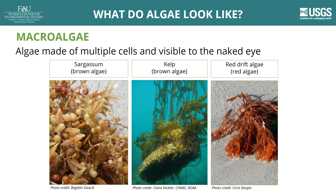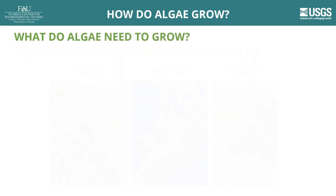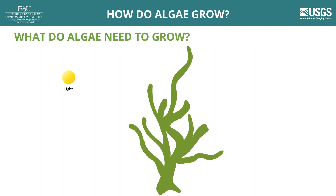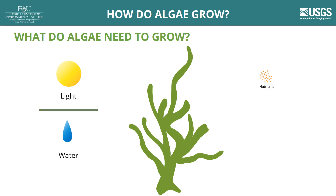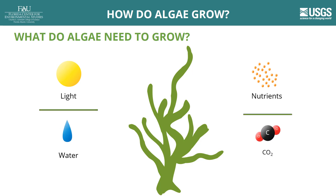Some types of macroalgae can grow attached to surfaces beneath the water and will float freely in the water if they become detached. Algae requires sunlight, water, select nutrients, and carbon dioxide to grow through photosynthesis.